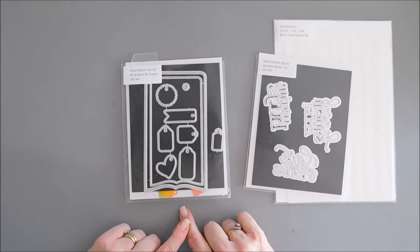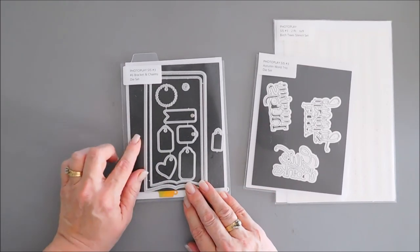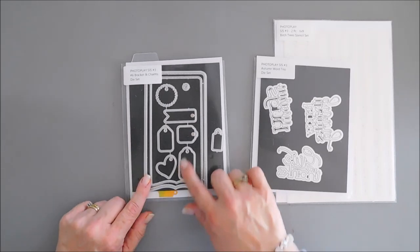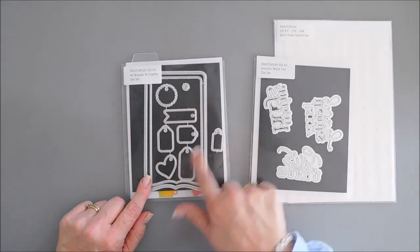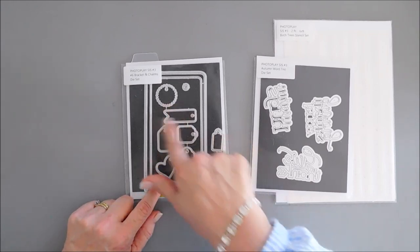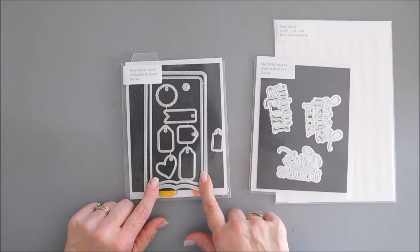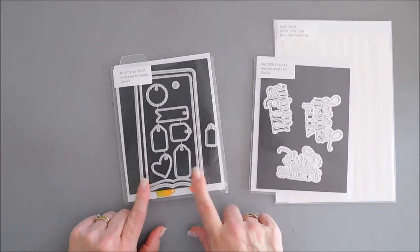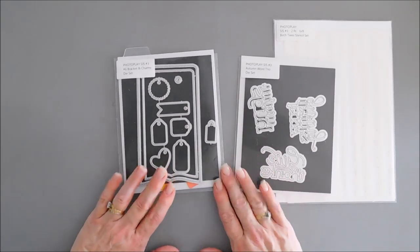This is the Number Six Bracket and Charms die set—a lot of mini charms here. I've already separated some of them, but there's some little mini tags and then two background dies with a really pretty bottom edge that will fit perfectly on the Say It With Stamps mini slimline cards.